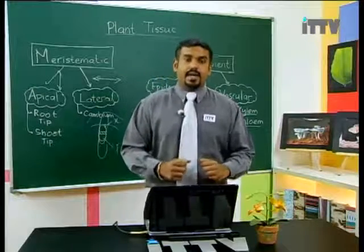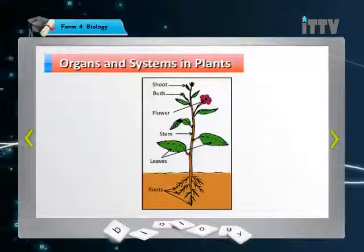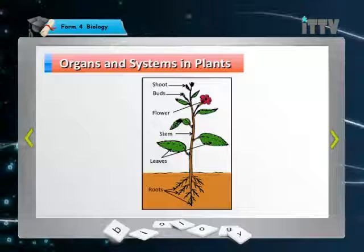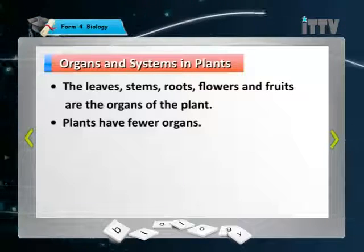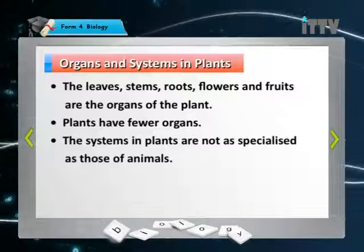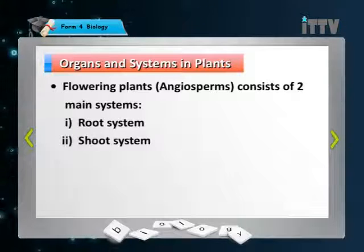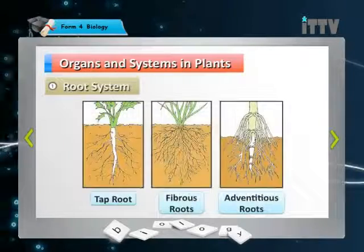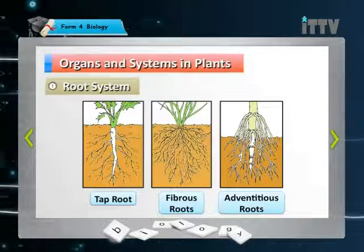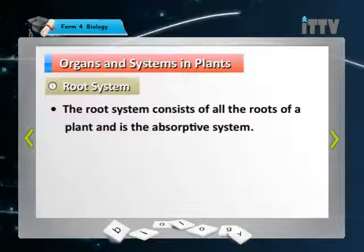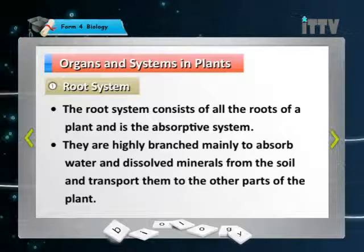Now you can see examples of systems and organs in a plant. In a plant you have shoots, flowers, stems, buds, leaves, and roots — these are all organs. Flowering plants, also known as angiosperms, have two main systems: the root system and the shoot system. Root types include taproot, fibrous root, and adventitious root. The root system absorbs water and mineral salts and is highly branched to maximize absorption.